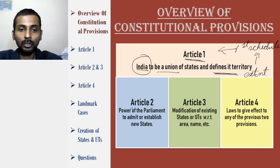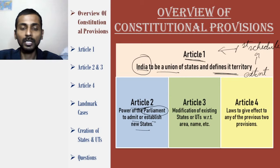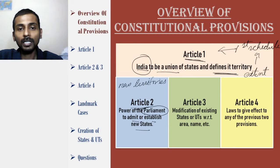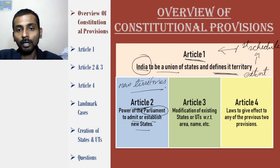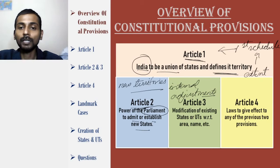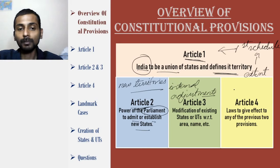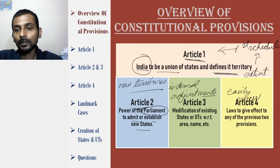Article 2 of the constitution gives power to the parliament to admit or establish new states — it deals with new territories of India, territories which were not existing and have been added newly. Article 3 talks about internal readjustments, dealing with territories which are already part of India. And Article 4 ensures that the powers of parliament in Articles 2 and 3 are easily executed. That is the purpose of all four articles.